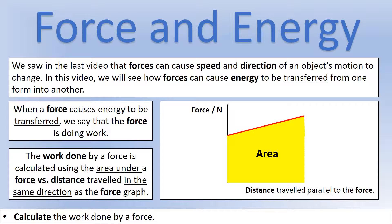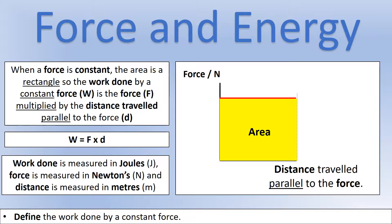At this level the force is going to be constant, which means the area is a rectangle on the graph. So the work done by a constant force is the force multiplied by the distance traveled parallel to the direction of the force. You usually see that as W = F × d. Work done is a form of energy transfer, measured in joules. Force is in newtons and distance must be in meters, in the same direction as the force.